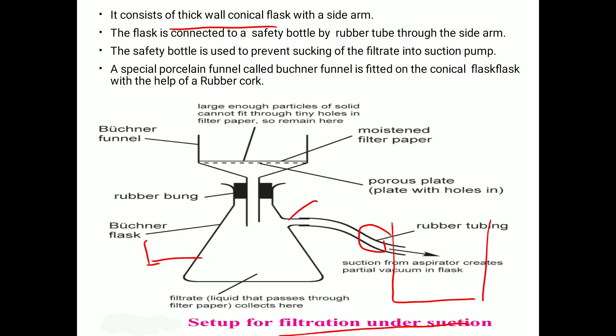The safety bottle is placed between the Buchner flask and the suction pump. Sometimes the filtrate coming into the Buchner flask can travel into the side arm and cause a problem in the suction pump, so to prevent this we place the safety bottle at that point. The safety bottle is connected through the rubber tube via the side arm and is used to prevent the filtrate from being sucked into the suction pump.